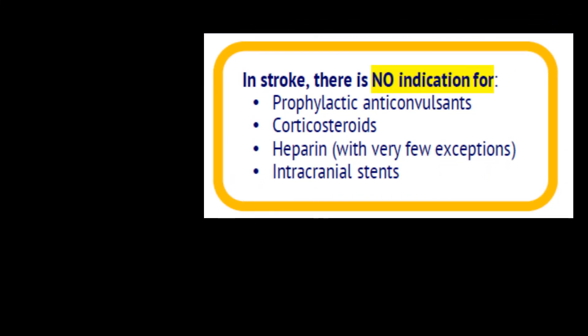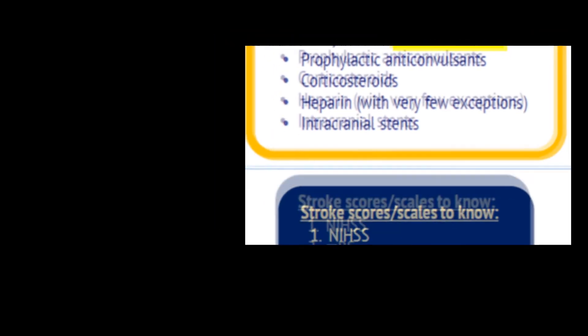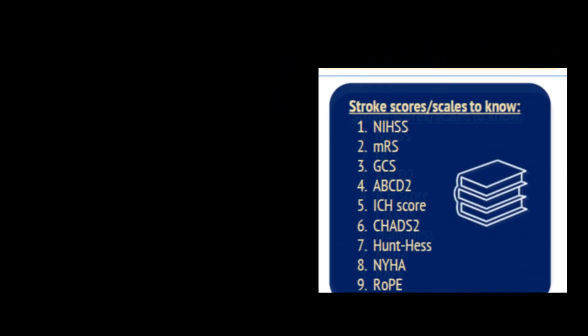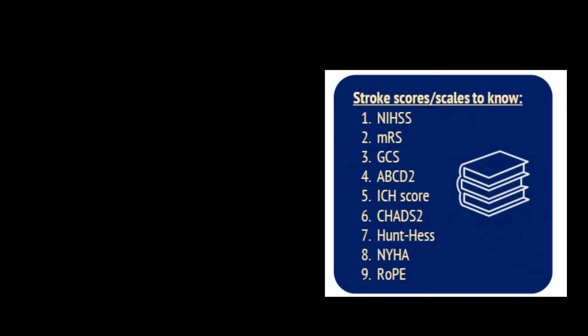Additional red flags include clinical or imaging evidence of cerebral herniation, fever, facial paresis, disconjugate eyes, forced eye deviation, and the presence of coagulopathy. In stroke — either ischemic or hemorrhagic — there is no indication for prophylactic anticonvulsants, corticosteroids, intracranial stents, or (with very few exceptions) heparin. Also remember to use normal saline and not albumin or lactated Ringer's.